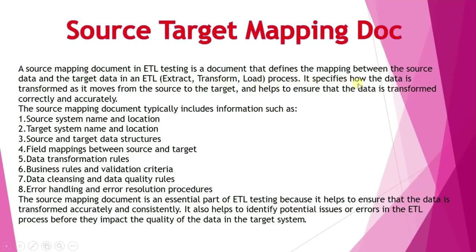It specifies how the data is transformed as it moves from source to target and helps to ensure that the data is transformed correctly and accurately. The source target mapping document typically includes information such as source system name and location, target system name and location, and source and target data structures — what we call table structures — including source table structure and target table structure, and field mappings between source and target.